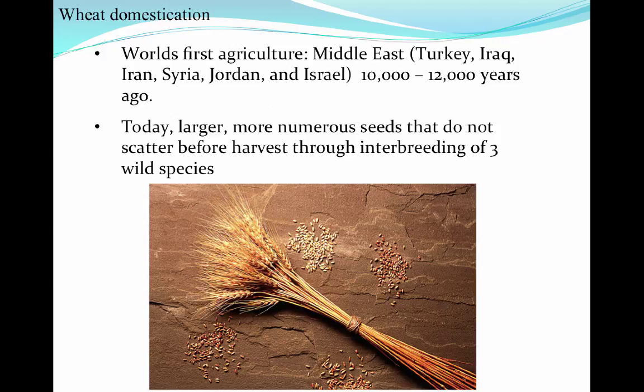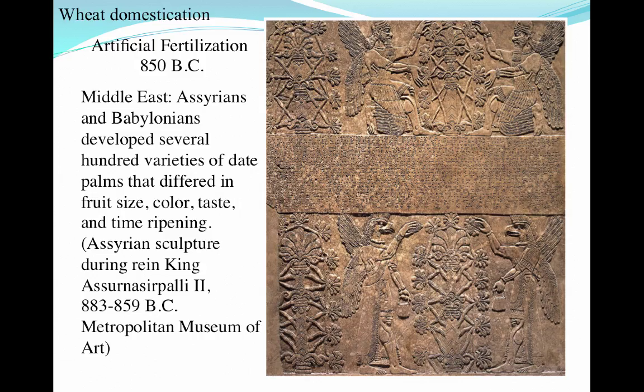— in areas like Turkey, Persia, Jordan, and Israel. Our earliest recorded records of those are about 10,000 to 12,000 years ago. That starting process has really led us to where we are today, where we have more numerous seeds that don't scatter before harvest — looking at the domestication of wheat as a crop.